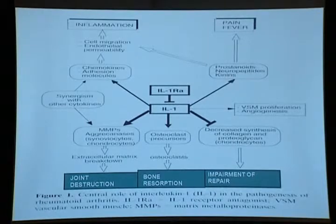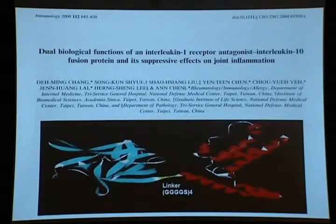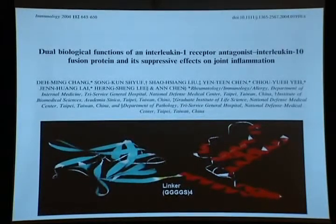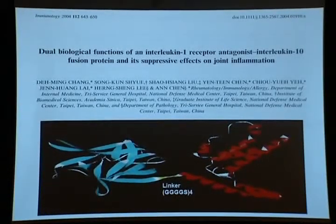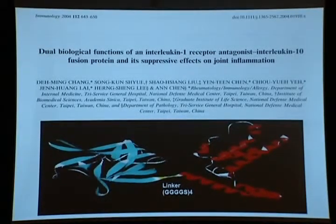Because IL-1RA will compete with IL-1 at the IL-1 receptor, it should be able to inhibit joint destruction, bone resorption, and impairment of repair. Since the IL-1 receptor antagonist has been commercially available, and based on the inflammatory cascade theory, I thought we could use two inhibitors simultaneously to treat RA.